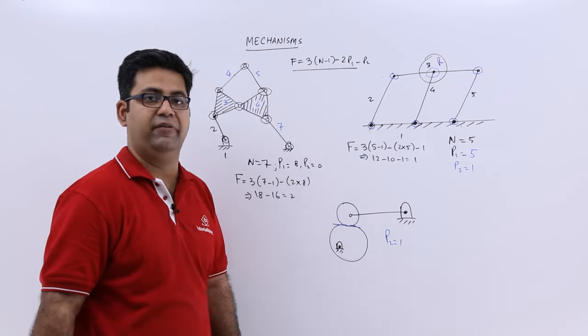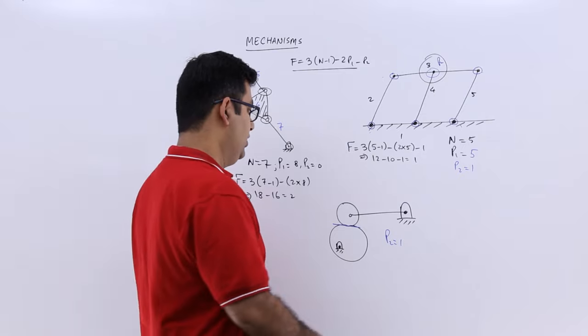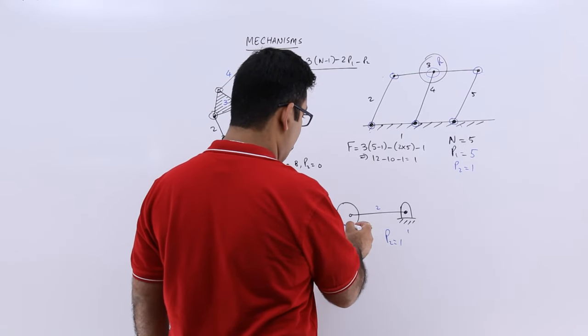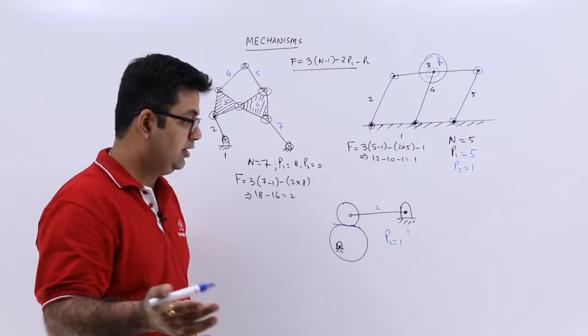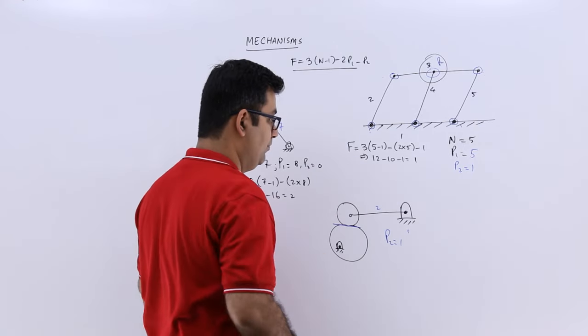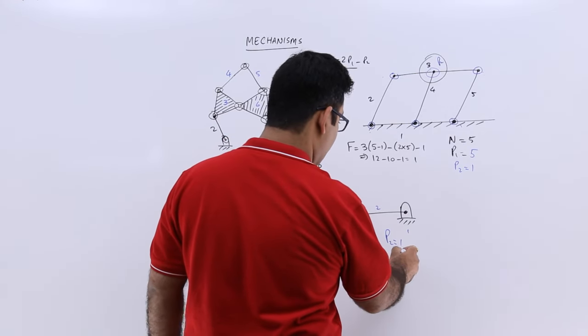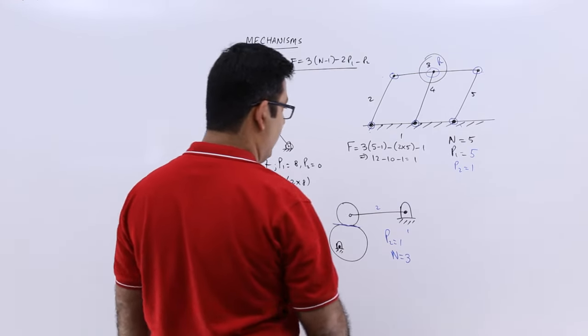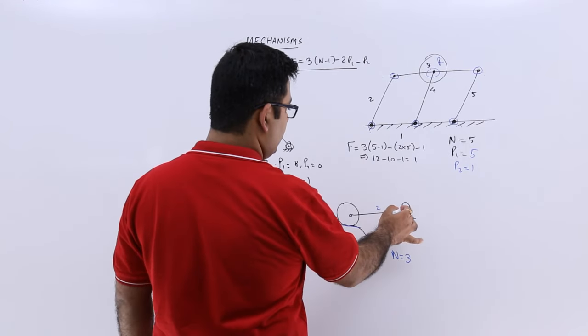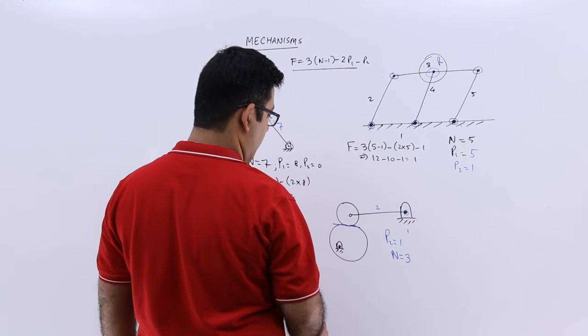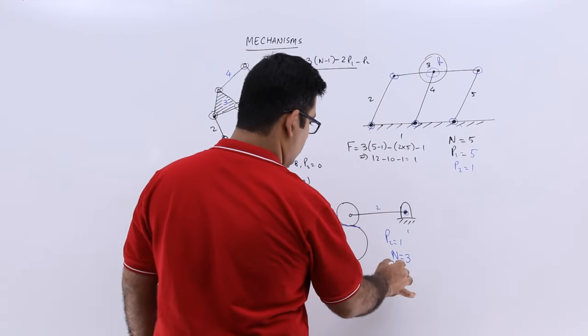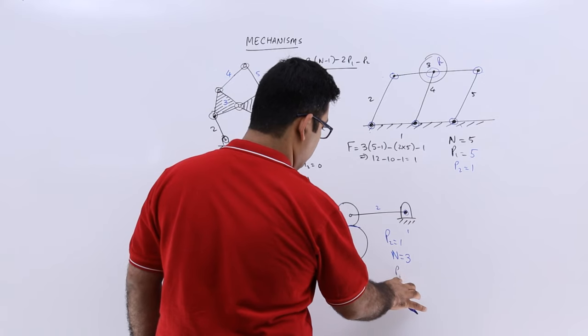Let us write that down straight away. Number of links: you have 1, 2, and 3. So there are 3 links in total. This is a single link, this is a single link. So I would say number of links is 3. Number of lower pairs: 1 and I would say 2, so p1 is 2.